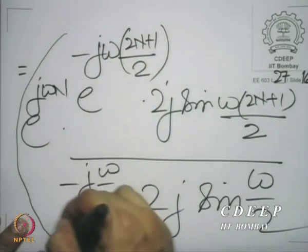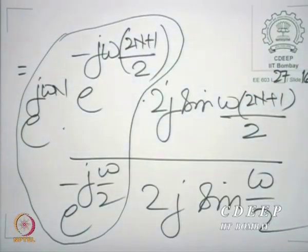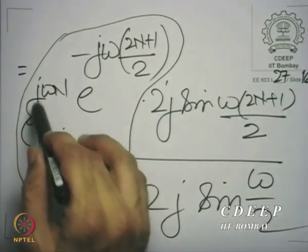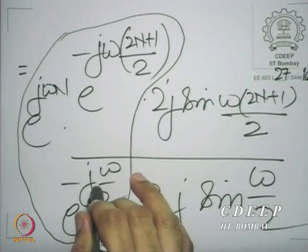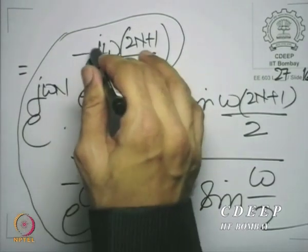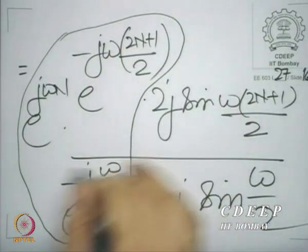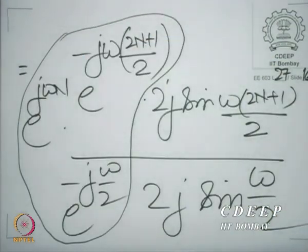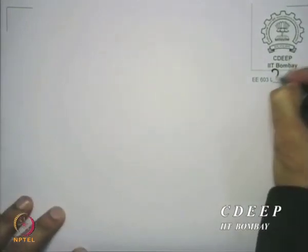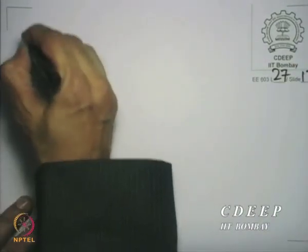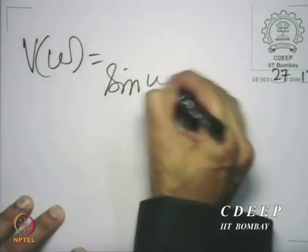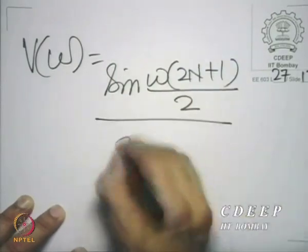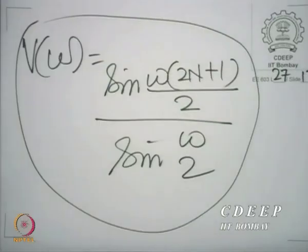It is not difficult to evaluate the remaining exponential part — we add the powers: j omega N minus j omega(2N+1)/2 minus j omega/2, which adds to 0. Therefore, this leaves just a unity factor, and the 2j cancels. What is left is V(omega) equals sin(omega(2N+1)/2) divided by sin(omega/2) — a very important expression indeed.